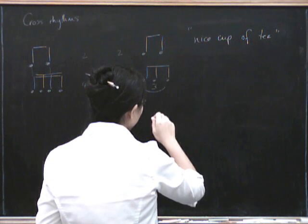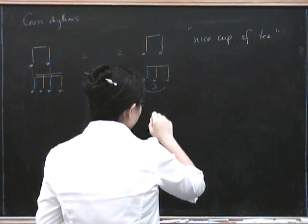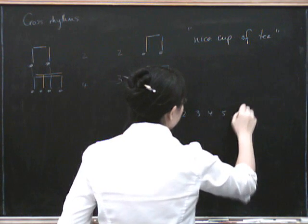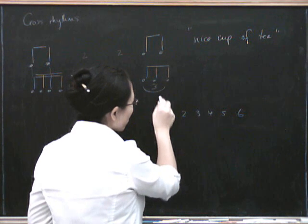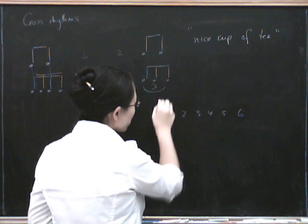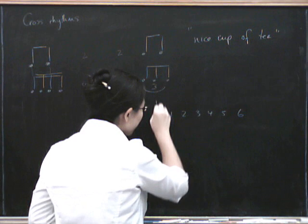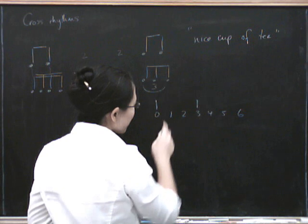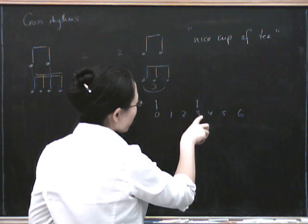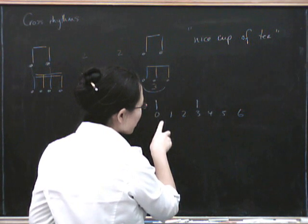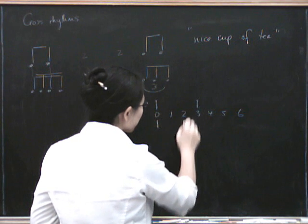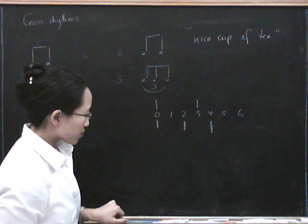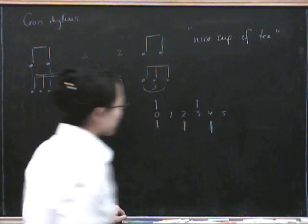So if we write down our six, just like we did before, we start with zero: 0, 1, 2, 3, 4, 5, 6. Your two is going to go on zero and on three — those are the ones that are zero mod three. The ones that are zero mod two give us 0, 2, and 4. We don't include six because that's the same as zero — it's the whole bar.